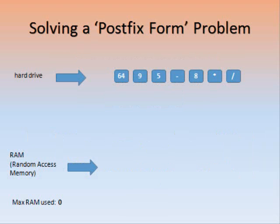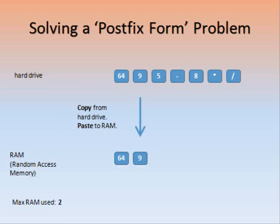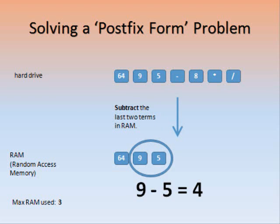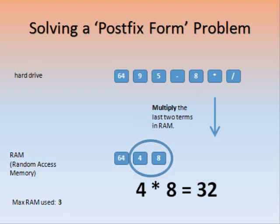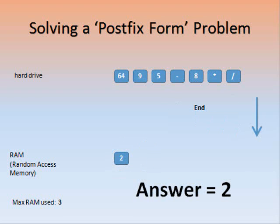The hard drive is the top row. The RAM, or Random Access Memory, is the lower row. Copy the 64 from the hard drive and paste it into the RAM. Copy, paste the 9. Copy, paste the 5. Subtract. Copy, paste the 8. Multiply. Divide. The answer is 2.